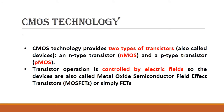CMOS technology stands for Complementary Metal Oxide Semiconductor, meaning it consists of both N-MOS and P-MOS transistors. MOSFET is controlled by the electric field, which is why it is called a field effect transistor. MOSFET is a voltage-controlled device.